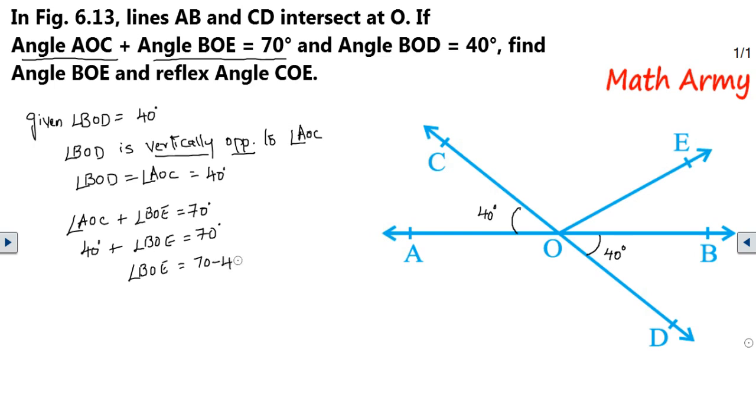So therefore, we got the information of BOE. So this part becomes 30 degrees. Now the last part of the question, what they are saying? Find angle BOE which we have just found it out. Reflex angle of COE. Guys, reflex of COE. So where is the COE? This one.